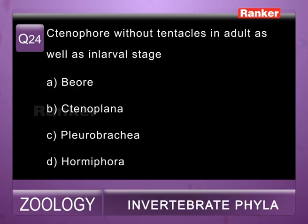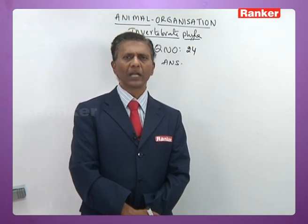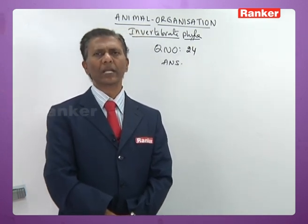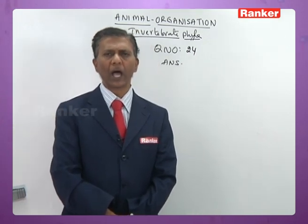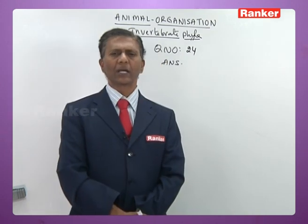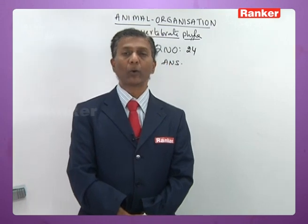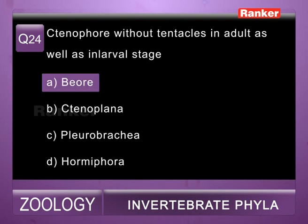Twenty-fourth question: ctenophores without tentacles in adult as well as larval stage — a) Beroe, b) Teneoplana, c) Pleurobrachia, d) Hormiphora. Ctenophora is divided into two orders: Tentaculata and Nuda. Teneoplana, Pleurobrachia, and Hormiphora belong to Tentaculata as they have tentacles. Beroe is the only example for Nuda (without tentacles). So twenty-fourth question correct answer is a) Beroe.